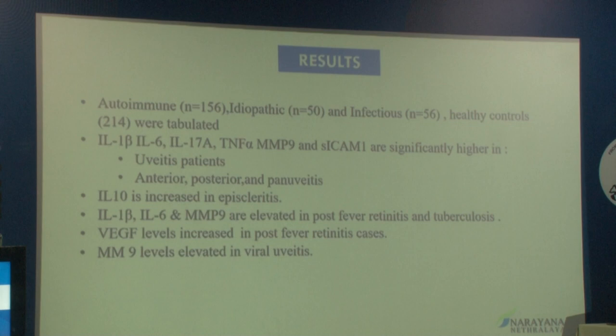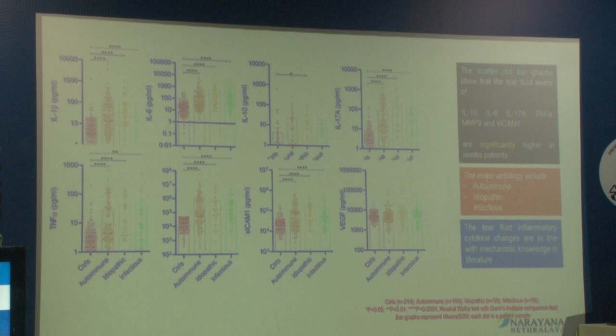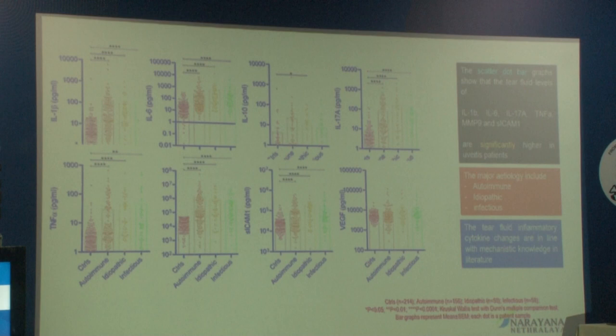The total number of patients — around 156 — were of autoimmune diseases, followed by idiopathic and infectious diseases, with around 214 being controlled patients. A scatter dot bar graph shows that IL-1 beta, IL-6, IL-17A, TNF-alpha, MMP9, and sICAM levels were significantly elevated in uveitic patients. The major etiology involved was autoimmune followed by idiopathic and infectious.